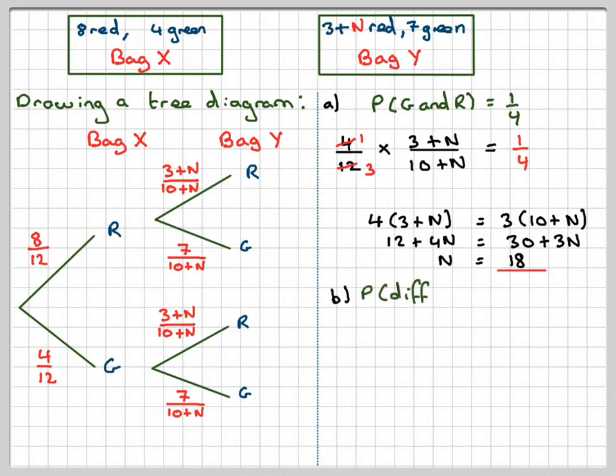In part B we want the probability that we get different colours. So we get different colours from here and here. So that will be probability of a red and a green, plus, because it can't happen at the same time, green and a red. These two events are mutually exclusive.